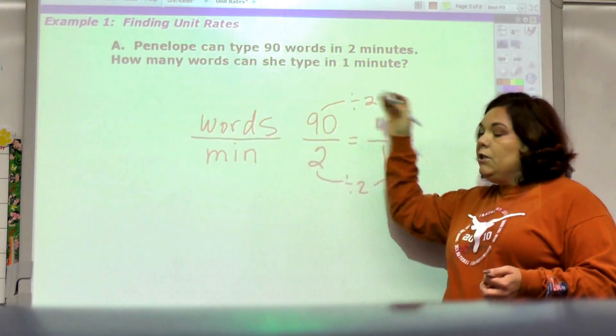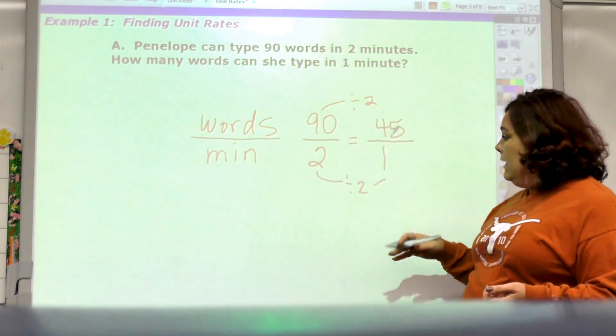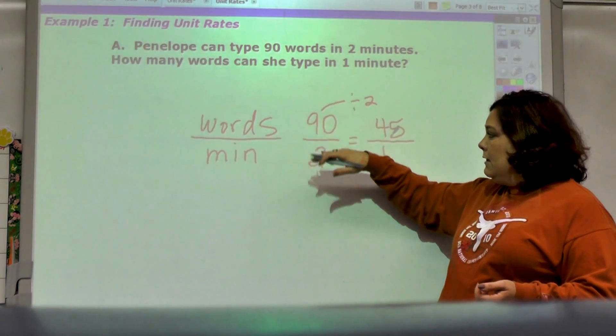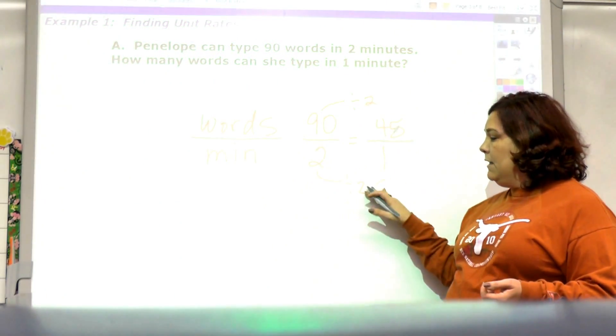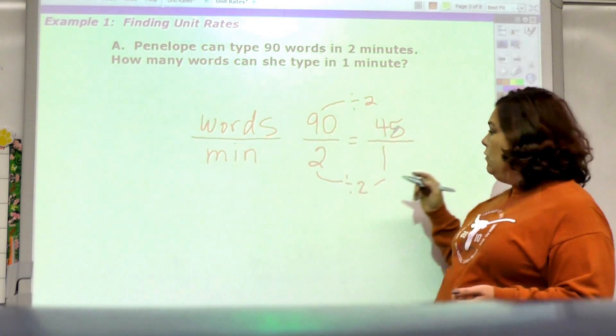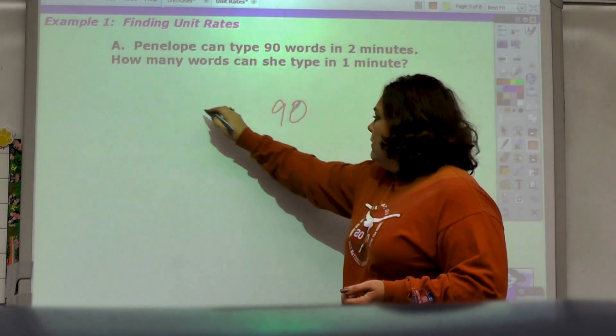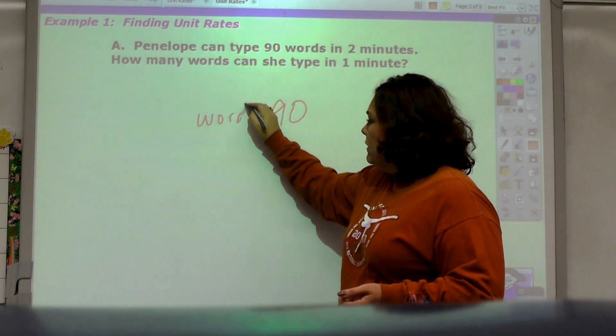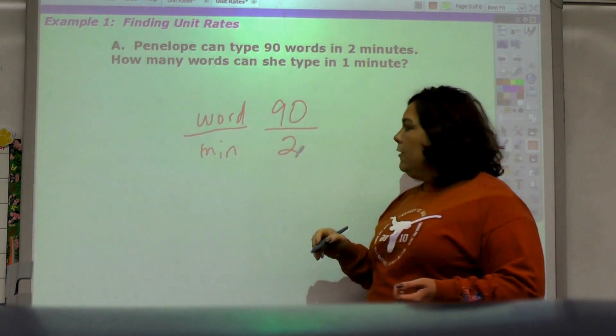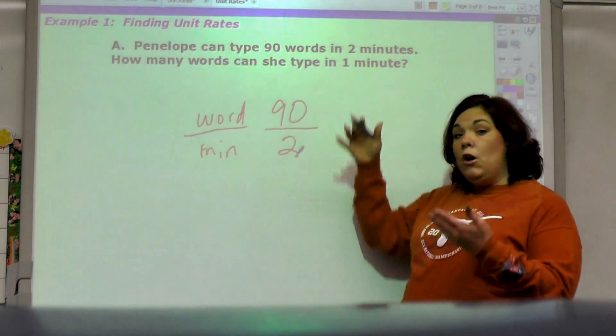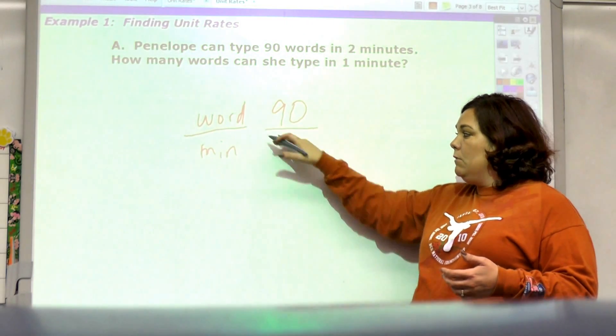This is the great thing about finding a unit rate: you can set it up like this and divide 2 divided by 2 equals 1, or 90 divided by 2 equals 45. You can do it setting up the ratio, but the cool thing is if you look at this, 90 divided by 2 isn't that the same thing as dividing by 2?